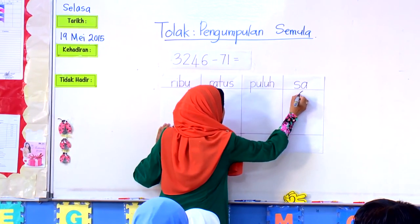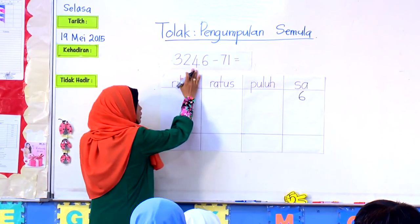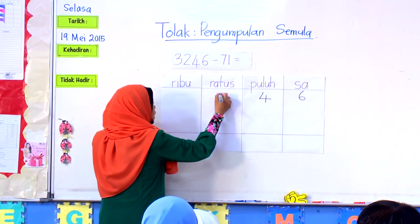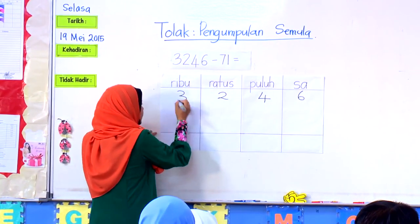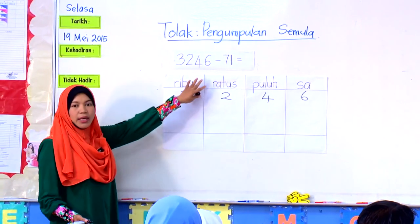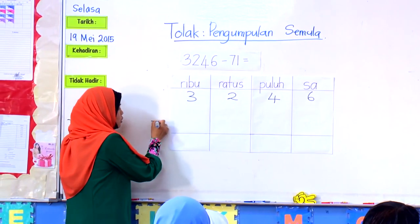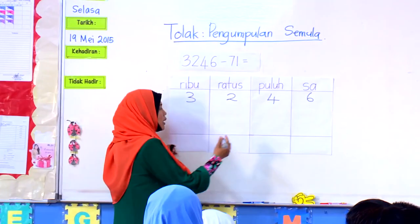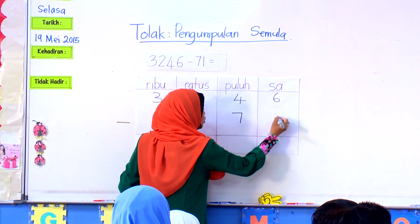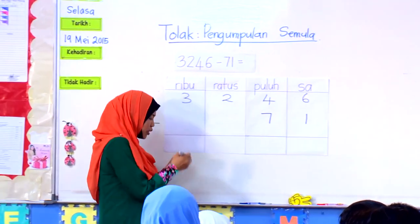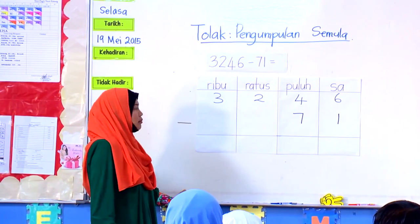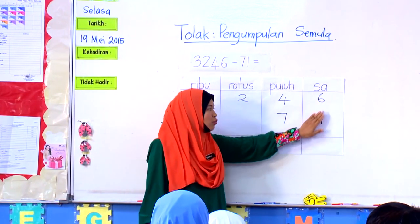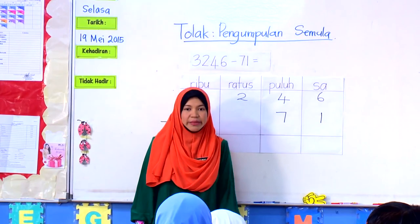6 akan diletakkan pada nilai sa, dan 4 kita masuk kepada nilai puluh, dua, seterusnya tiga. Kemudian kita nak tolak dengan 71 — letakkan, jangan lupa simbol tolak. Tanda tolak, kita tolak dengan 71. Dekat sini, bila kamu lihat soalan seperti ini, 6 ini untuk tolak dengan 1 tidak menjadi masalah, kerana bila 6 tolak 1, nombor 6 lebih besar daripada nilai 1.